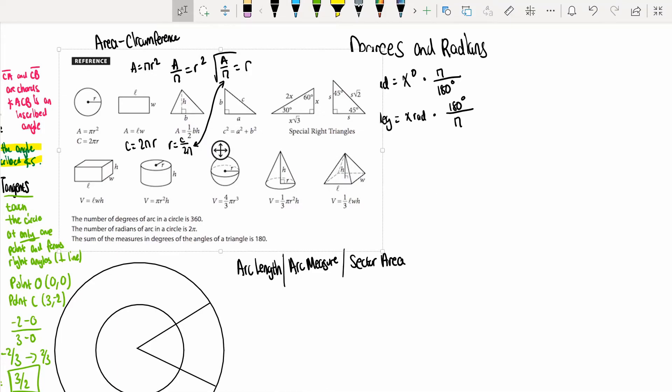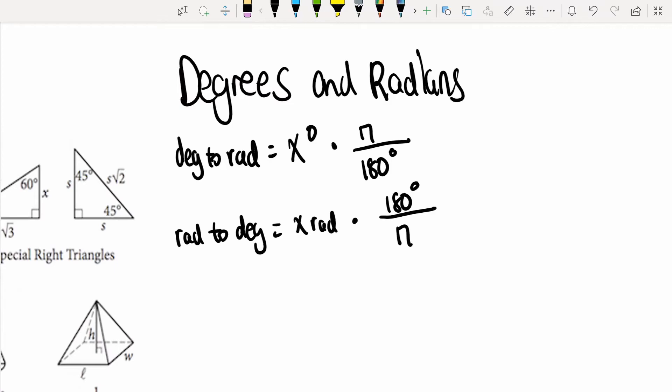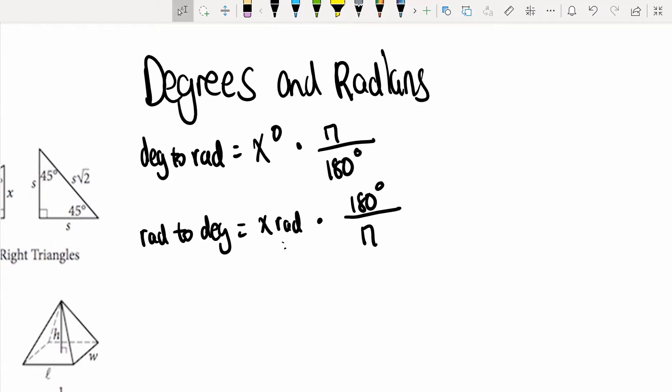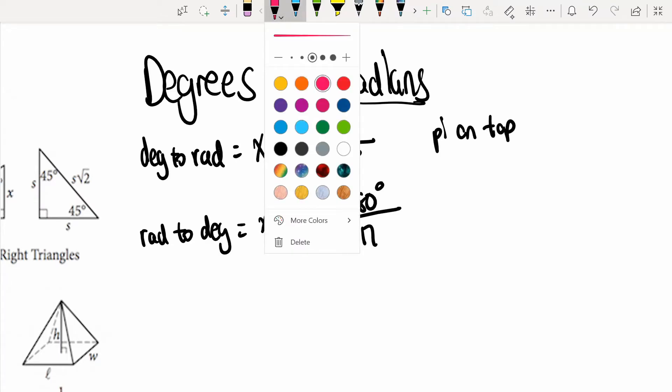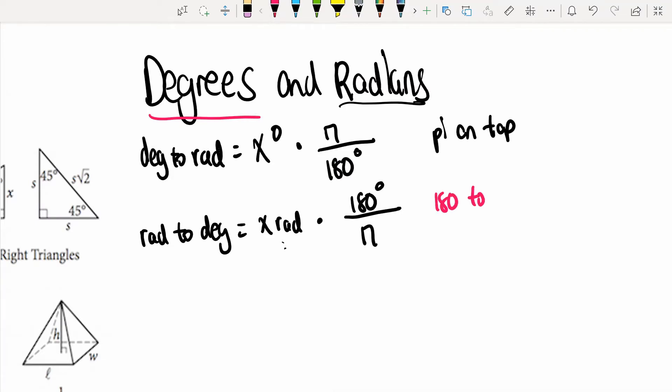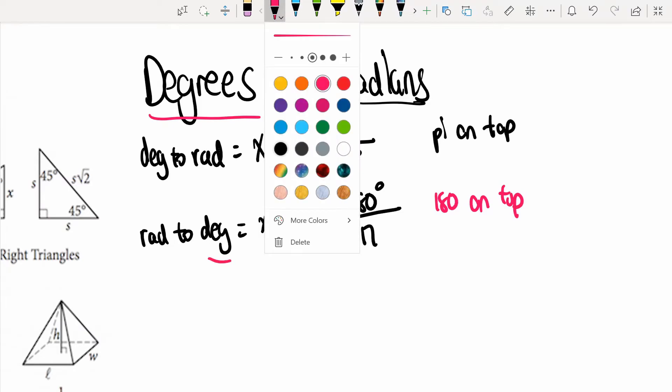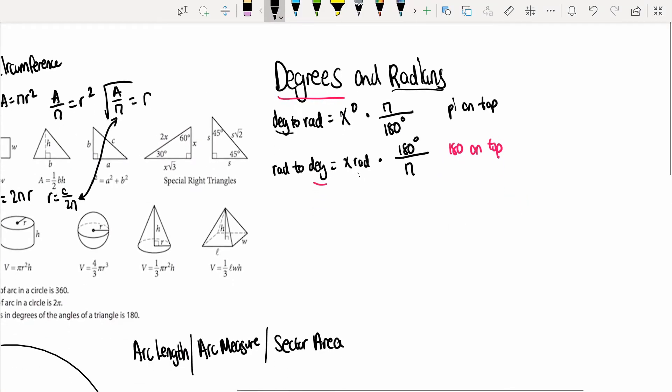Next, what we're going to talk about is degrees to radians. If they give you an angle measure in degrees, the only way you would convert that is using this formula, without a calculator. It would be x degrees times π/180. And to do the opposite, you would get x radians times 180/π. Let me show you a trick to remember this: if you wanted to convert into radians, you always put the π on top. And if you want to convert to degrees, then you put the 180 on top.